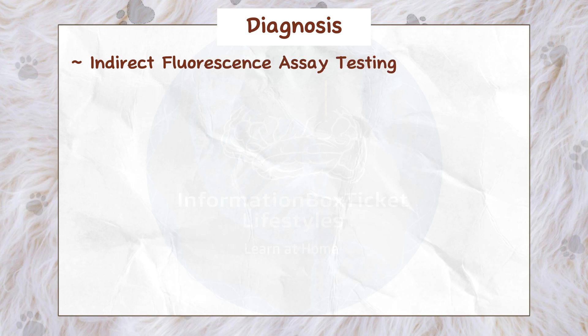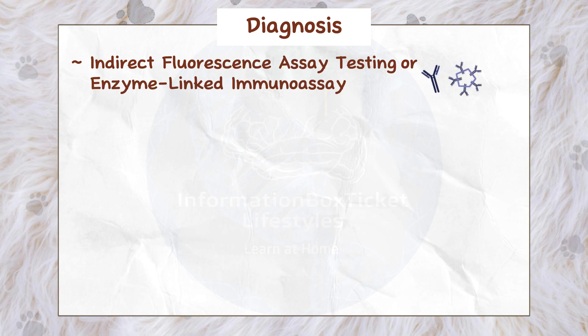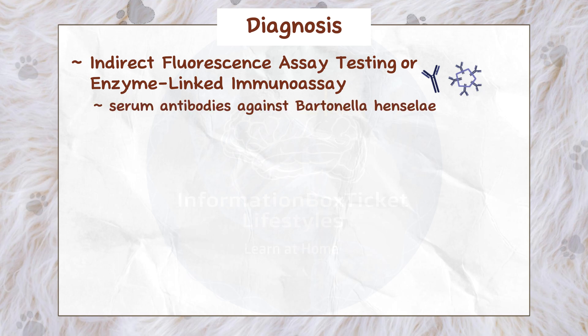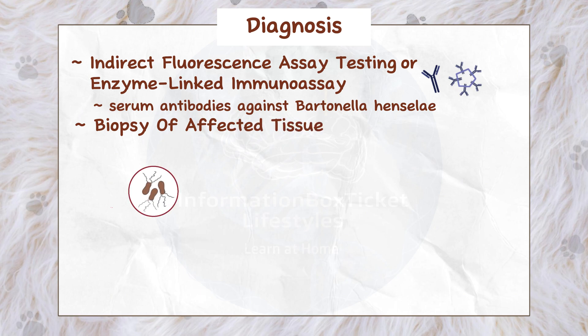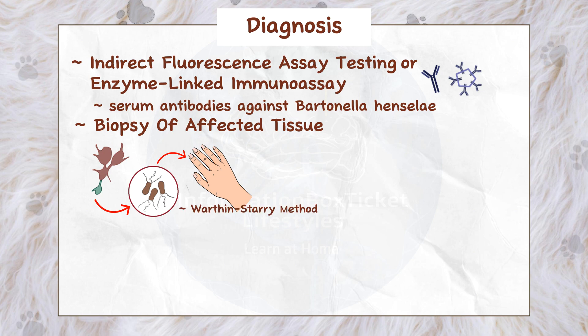In most cases, Bartonella henselae infection is detected using indirect fluorescence assay testing or enzyme-linked immunoassay, which detects blood antibodies against Bartonella henselae. Alternatively, a biopsy of affected tissue — either a swollen lymph node in cat scratch disease or a skin lesion in bacillary angiomatosis — can be performed, and the tissue stained with the Warthin-Starry procedure to directly visualize the bacteria.